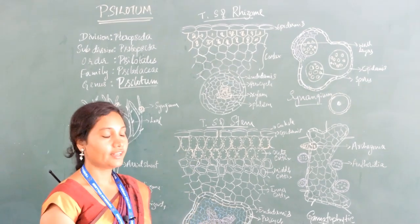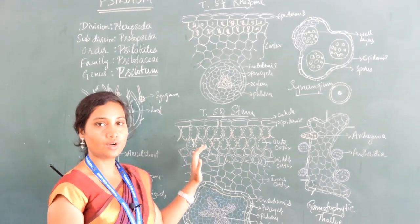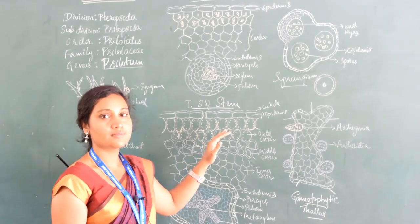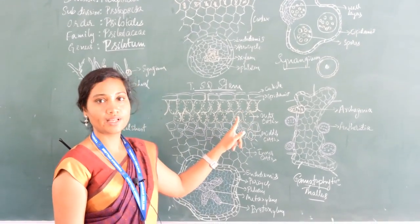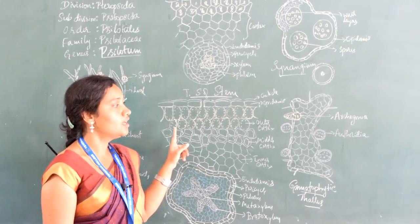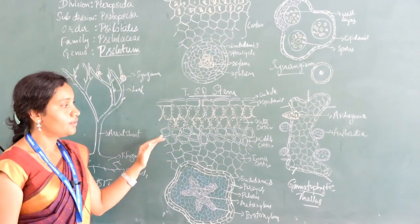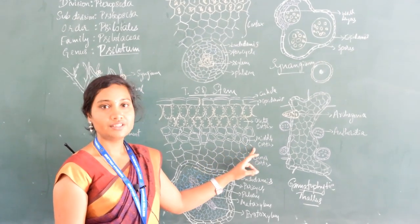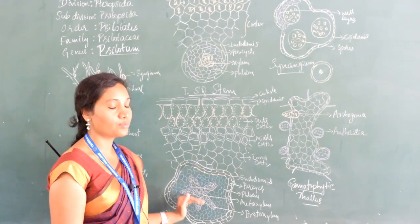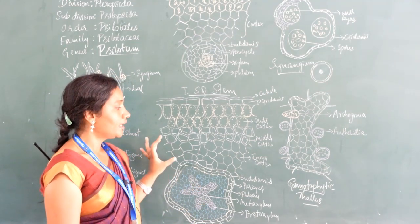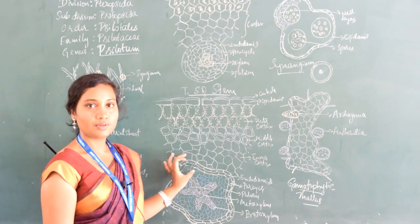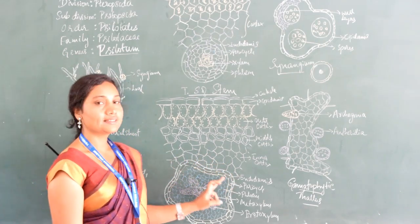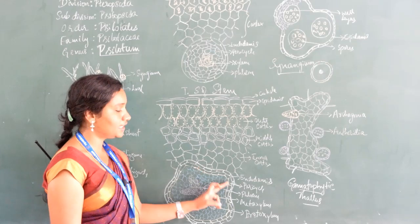The epidermis is followed by the cortex, differentiated into outer cortex, middle cortex, and inner cortex. The outer cortex is made up of loosely arranged chlorenchymatous cells, which help in photosynthesis. The middle cortex is made up of sclerenchymatous cells, which is dead mechanical tissue providing mechanical support to the stem. The innermost cortex is made up of parenchymatous cells, which help in storage of starch material.